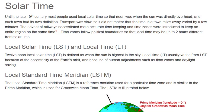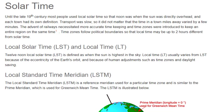Solar time: until the late 19th century, most people used local solar time so that noon was when the sun was directly overhead, and each town had its own definition. Transport was slow, so it did not matter that the time in a town miles away varied by a few minutes. The advent of railways necessitated more accurate timekeeping, and time zones were introduced to keep an entire region on the same time. Time zones follow political boundaries so that local time may be up to two hours different from solar time.